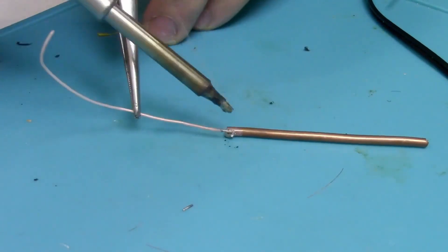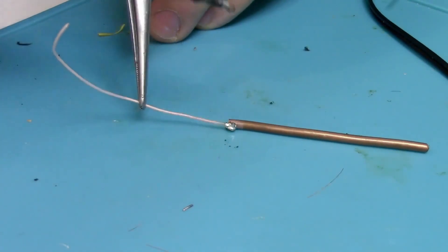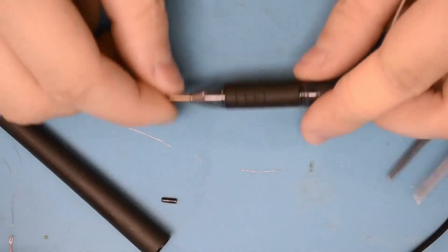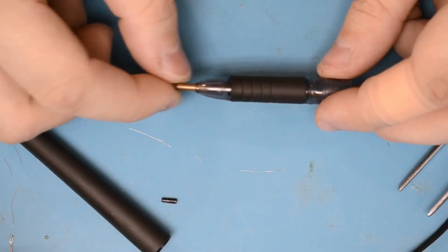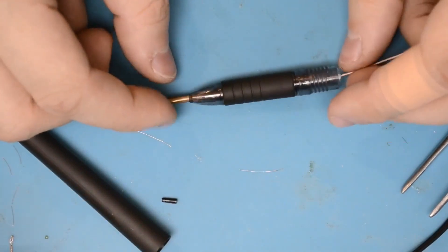I decided to make the probe from a piece of copper wire from a grounding cable. First, I soldered a wire to it and then secured it in a housing using hot glue. Later, I sharpened the tip with a file and tinned it with solder.